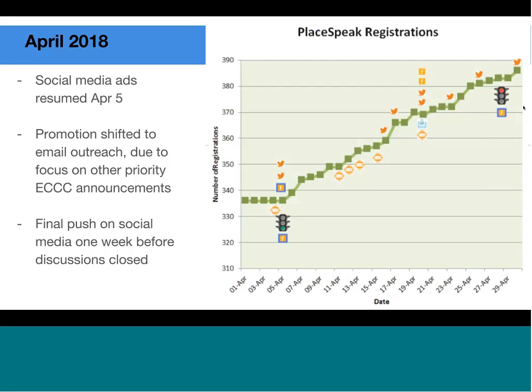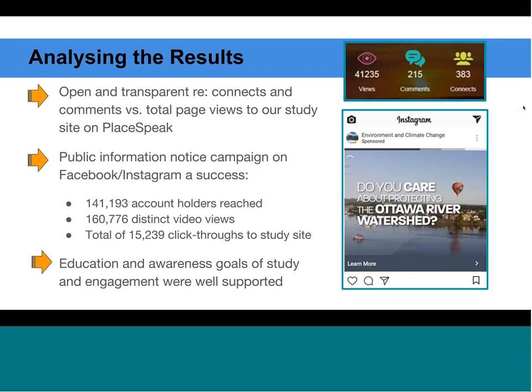Taking a look at the high-level results: we were live for 97 days, from January 25th to April 27th. We had a total of 41,235 page views on PlaceSpeak, 383 people who registered or connected, and 215 individual comments posted on our site. From near the very beginning, once enough people were connected and participating, those numbers appeared at all times, so we were very open and transparent about how many people were connected and how many pages had been viewed.